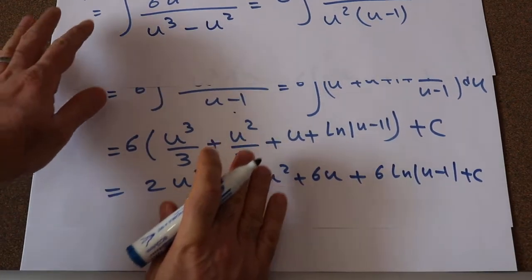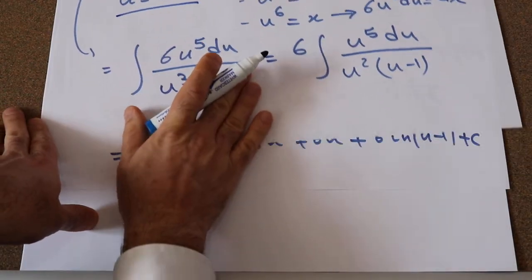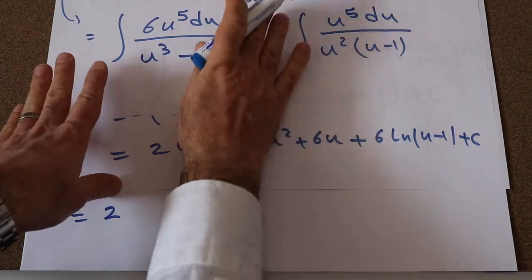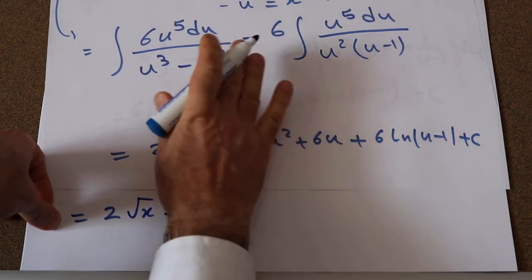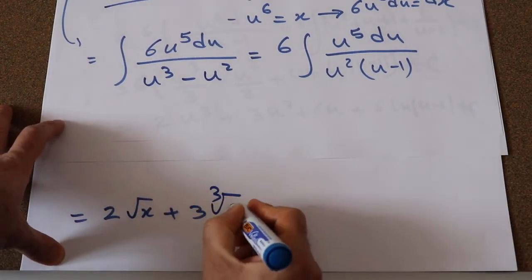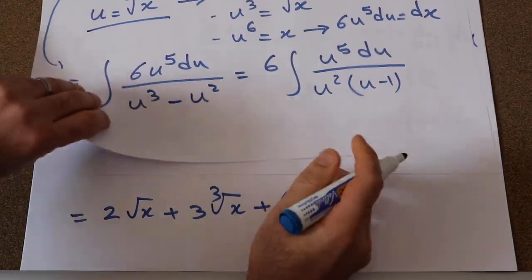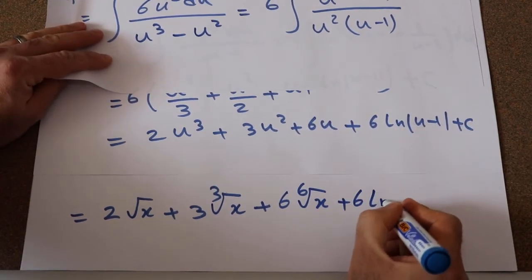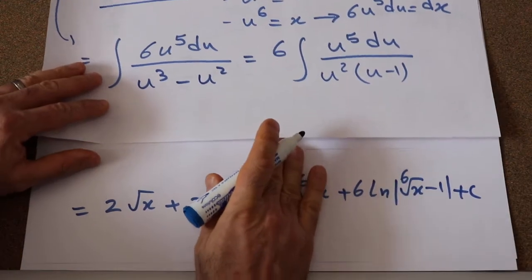All you need to do at this stage is to substitute the parameter u back with its definition, which is the 6th root of x. So this becomes: 2 times u³, which is the cube root of x, giving 2·(cube root of x); plus 3 times u², which is the square root of x, giving 3·(square root of x); plus 6 times u, which is the 6th root of x; plus 6·ln|6th root of x minus 1| plus C, the constant of integration.